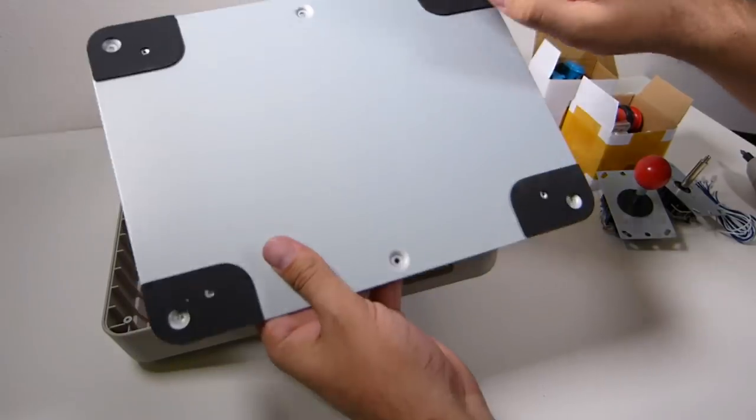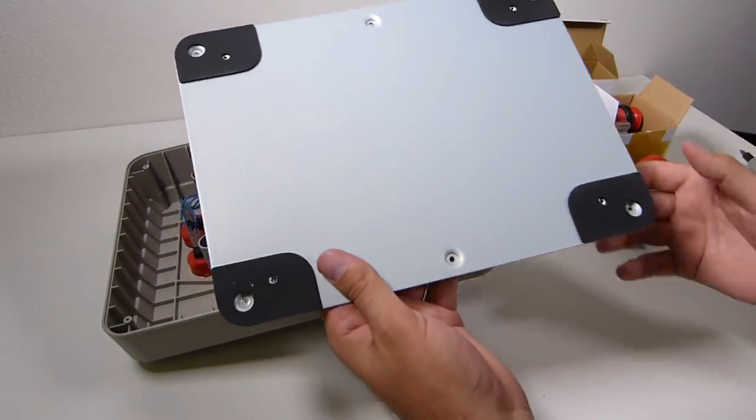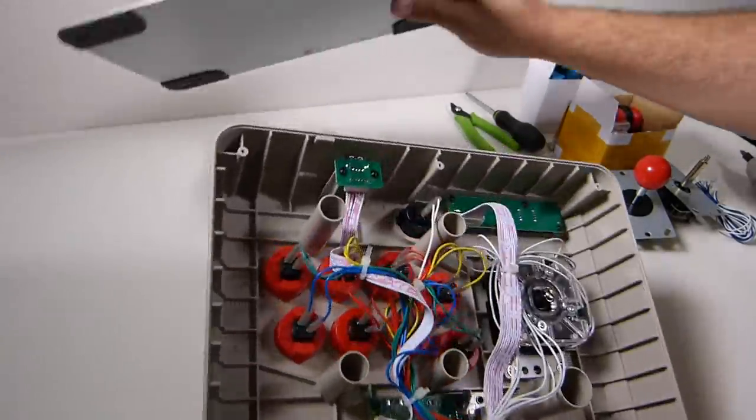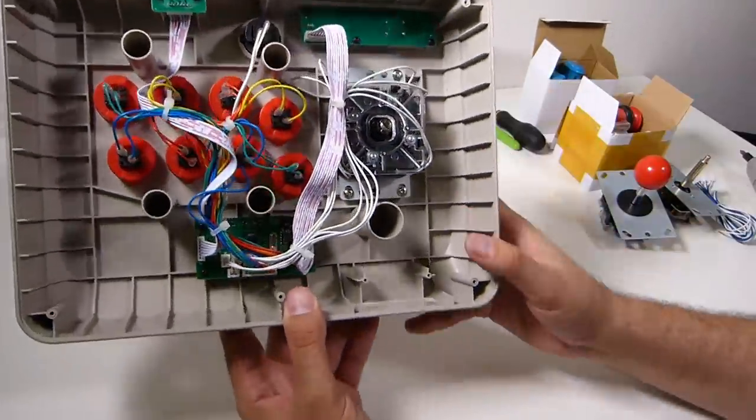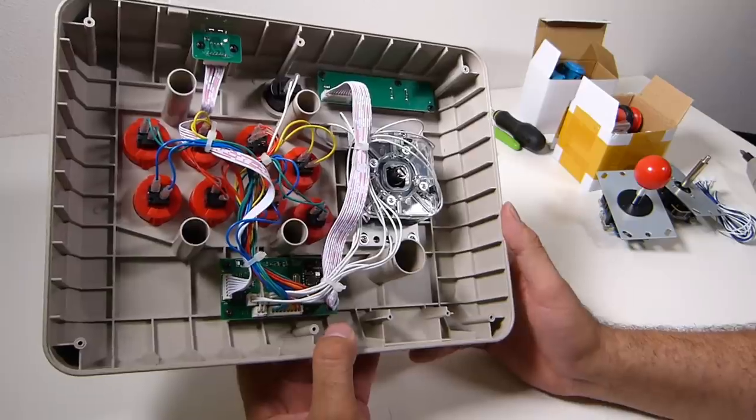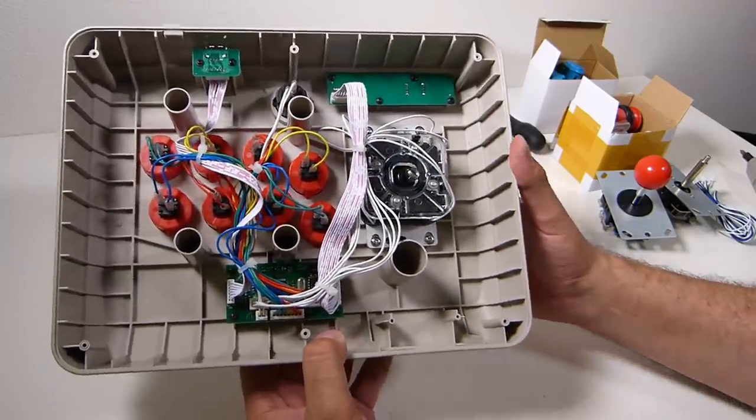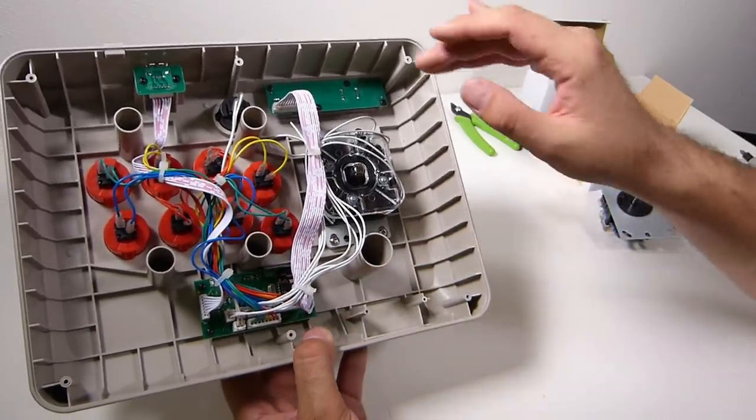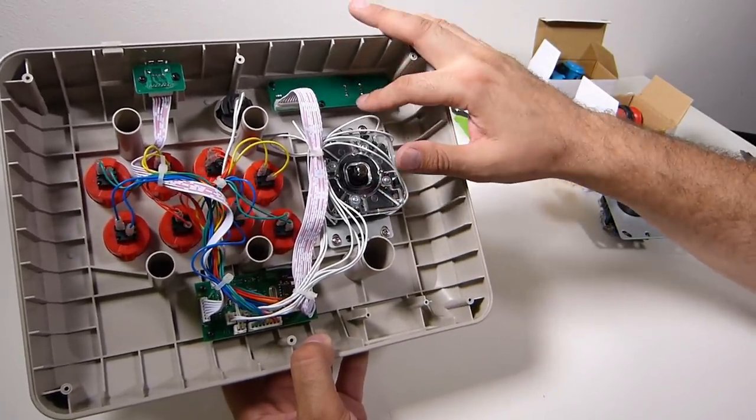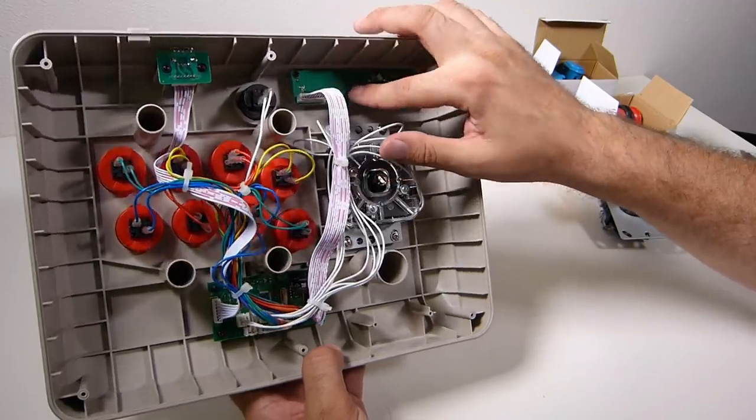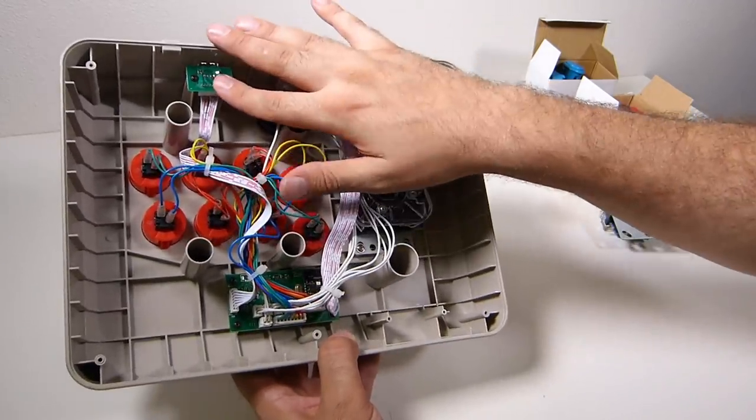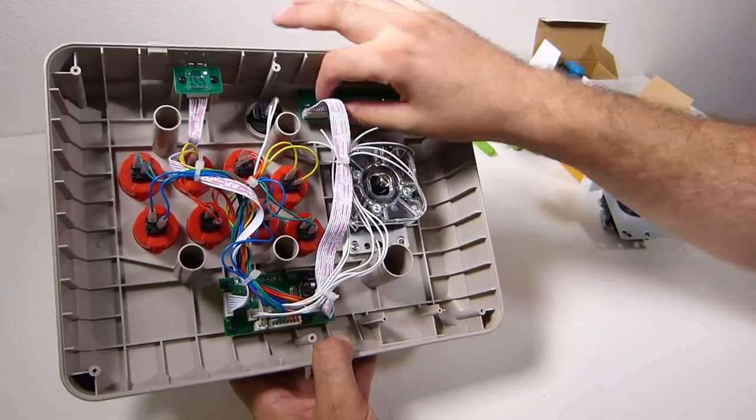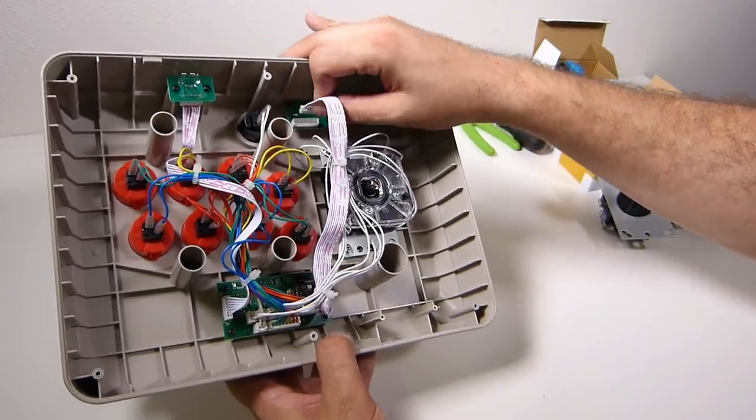First thing we're going to want to do is take the bottom off, and I've already done that. It's just six screws. You're going to use Phillips head to remove. Get that bad boy off, and then this is what the inside looks like. So pretty clean, they have this set up pretty well with the wiring and whatnot.